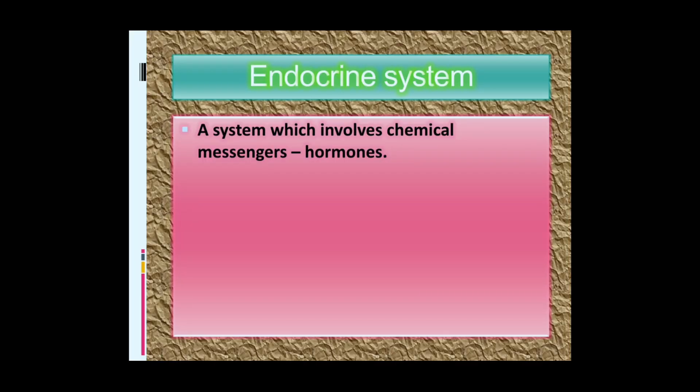So what is the endocrine system? It is a system which involves chemical messengers called hormones. It consists of a feedback mechanism — a mechanism which helps to maintain homeostasis.